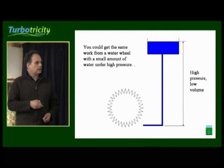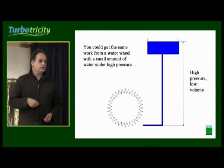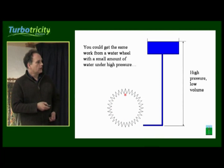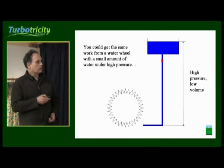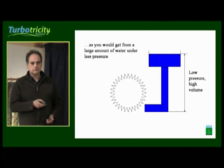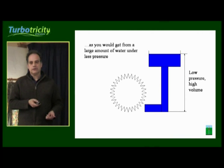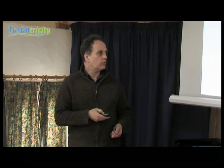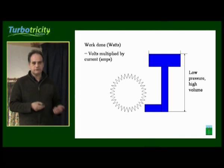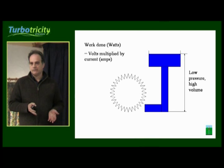a high voltage would be similar to having a high head height in a water system. So if you had a high water tank and high pressure, that would equate to being high voltage. And you could get the same amount of work done by a small volume of water — a small current — from a high head, as you could from a large volume of water at a low head. So the high head is the equivalent of high voltage, the low head is equivalent to low voltage, the high current is high amps, and the low current is low amps.